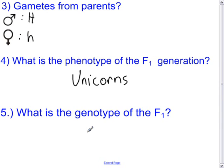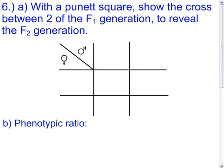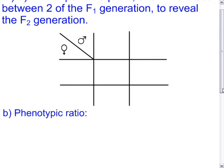Since offspring get one gene from each parent, the F1 genotype must be the heterozygous form (Hh). This makes sense because all offspring were unicorns — they all take after the dominant trait. Now, with a Punnett square, show the cross between two F1 individuals to reveal the F2 generation.